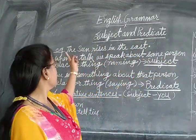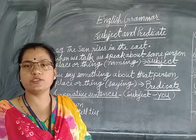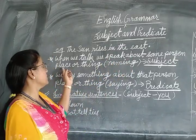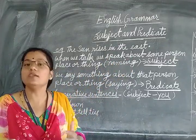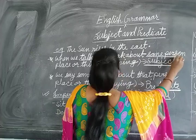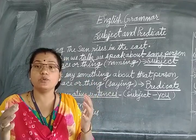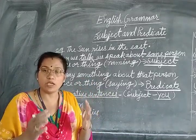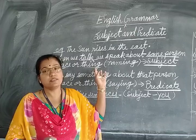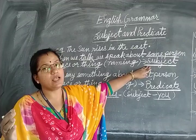Look at — I have written a sentence: 'The sun rises in the east.' Now, let me explain subject and predicate. When we talk, we speak about some person, place or thing. Whom we are talking about, what we are talking about, or what we are naming — that person, place or thing is known as the subject.